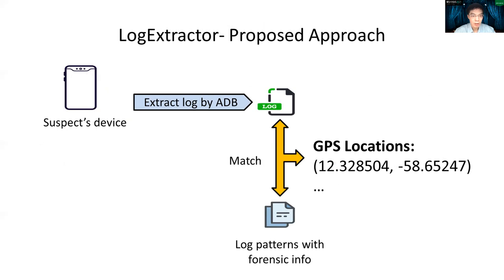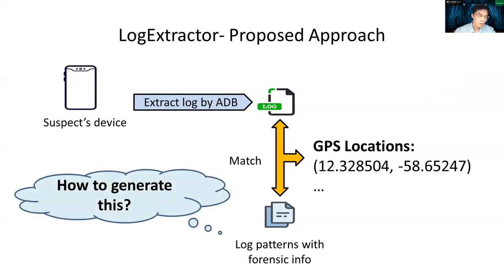Here is our proposed scenario with the help from LogExtractor. After the forensic investigator obtains the log message from the suspect device, LogExtractor automatically identifies the evidentiary log messages and extract the evidence like GPS location as shown in the example. So now the problem is how to generate these kind of patterns. Next, we will present how we generate patterns here for matching and extracting the evidence.